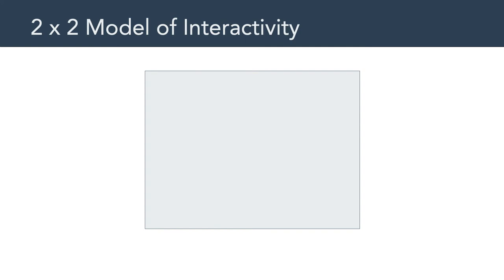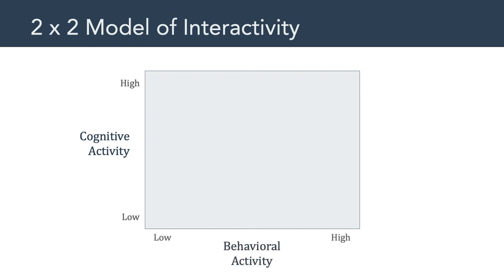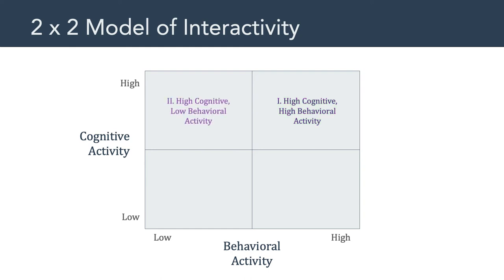We can think of this as a simple two-by-two model of interactivity. On one side, we have cognitive activity, falling along a continuum from low cognitive activity to high cognitive activity. On the other axis, we have behavioral activity, which can either be low or high. If we divide these dimensions up, what we end up having are four quadrants. In quadrant one, we might have high cognitive and high behavioral activity. In the second quadrant, high cognitive but low behavioral activity. In the third quadrant, low cognitive and low behavioral activity. And in the fourth quadrant, low cognitive activity with high behavioral activity.